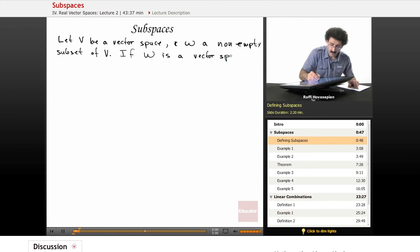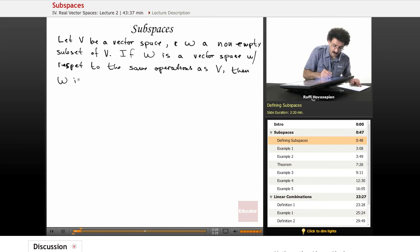If W is a vector space with respect to the same operations as V, then W is a subspace of V.